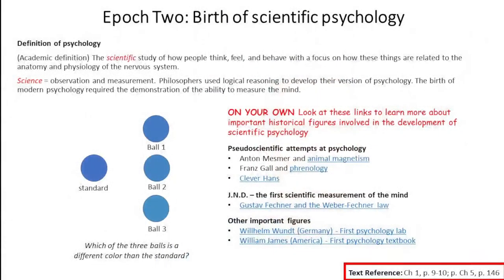What does it mean to be scientific? Scientific means you measure things — you observe things and you measure them. Each and every one of you can tell me why you think someone is good or bad, or why someone can remember or forget something. But unless you measure it, unless you provide measurements that support your theory, you are not being scientific. Science is a process of observing and measuring the world that you are interested in.